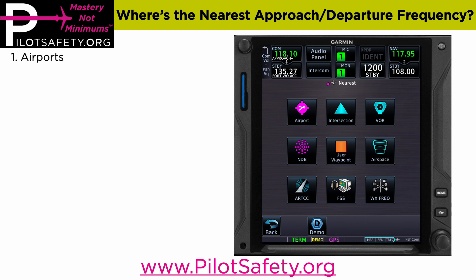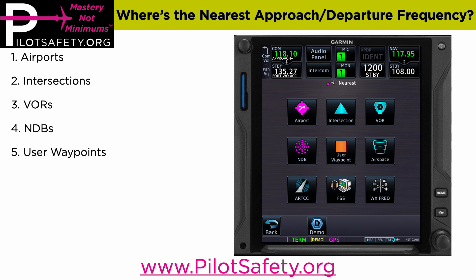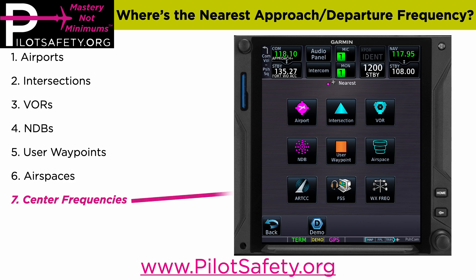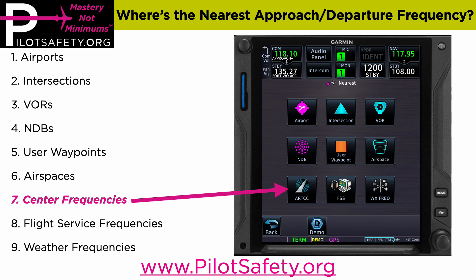Obviously, it shows you the nearest airports, the nearest intersections, the nearest VORs, the nearest NDBs, the nearest user waypoints that you've created, the nearest airspaces, and the nearest center frequencies, along with the nearest flight service frequencies, and even the nearest weather frequencies.